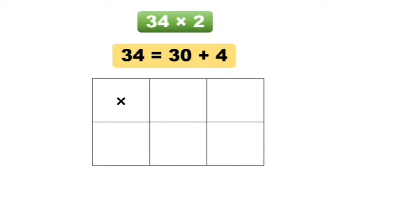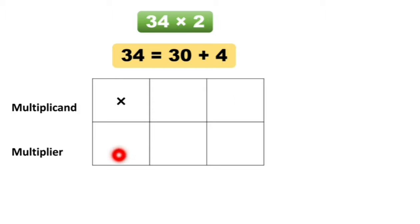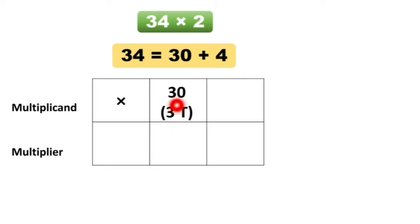Mula no, lattice method use karta na, saggat aadhi aplella ek box draw koreung gheecha. Tyanantrna, ver cha row madhe multiplicant write karechet aplella. Aani khal cha ya box madhe multiplier write karechai. So ithe multiplicant aani ithe multiplier. Mag, 34 cha expanded form right koreung gheo: 30 plus 4. Thar eka box madhe ek number write karechai.